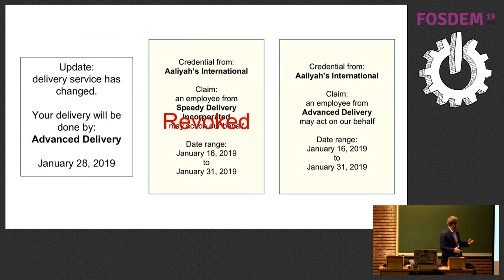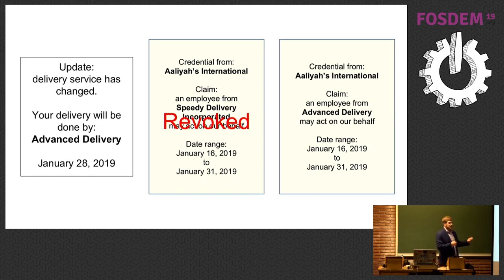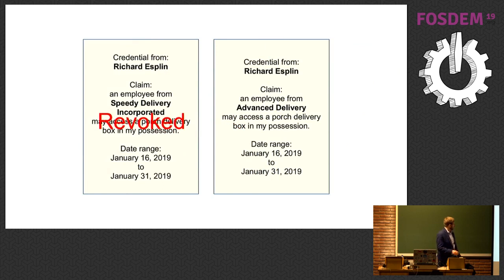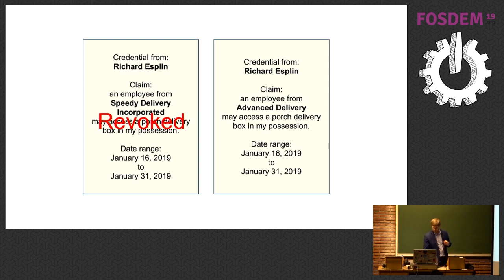However, Speedy Delivery doesn't do tigers, so Advanced Delivery is going to do it instead. The vendor can revoke that claim — whenever it's presented, the system goes to the distributed ledger and says oh wait, this has been revoked, it's no longer valid. Somebody else is going to do that work so they issue a new credential. I can go to the box, revoke the credential I gave it for Speedy Delivery, and instead Advanced Delivery can interact with that box.